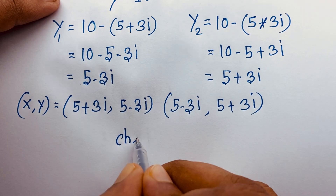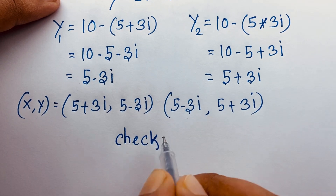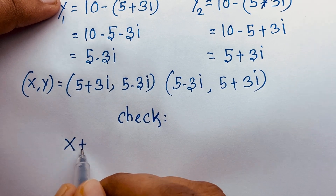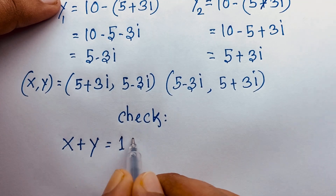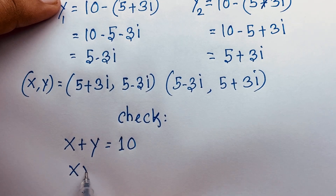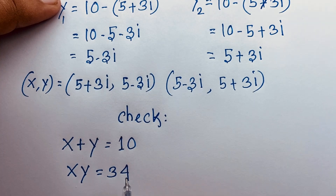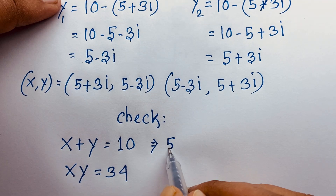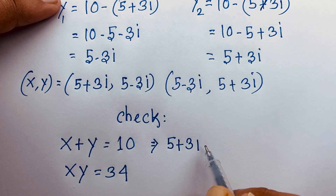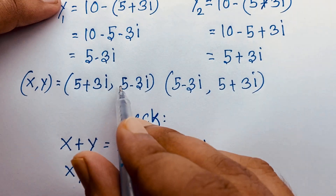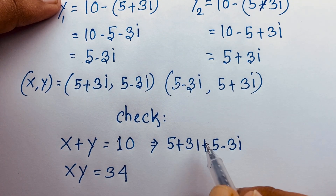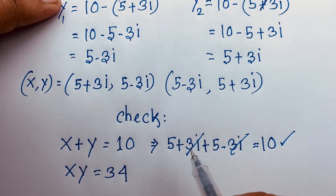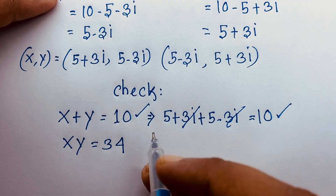Now let's verify our answer. For x plus y: x is 5 plus 3i and y is 5 minus 3i. Adding them, the imaginary parts cancel out, and 5 plus 5 gives 10. So the left-hand side and right-hand side are both equal.